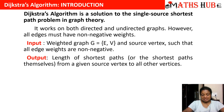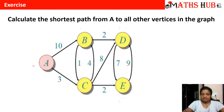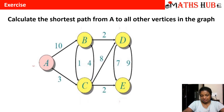Now let me tell you with the help of an example how this algorithm works on a weighted graph. We have to calculate the shortest path from vertex A, marked with a pink color, to every other vertex present in this graph. You can see that it is a directed graph and every edge has a weight associated with it.